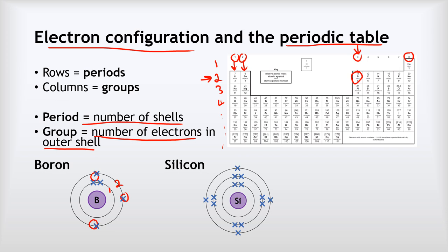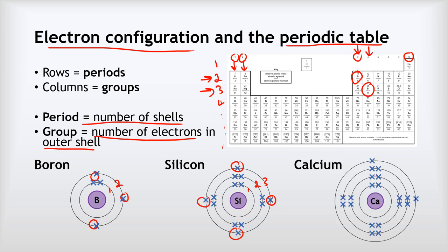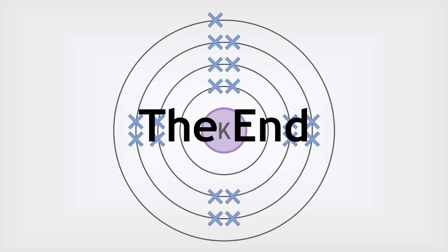Silicon is in period three and group four, so it has three electron shells and four electrons in its outer shell. Calcium is in period four and group two, giving four electron shells and two electrons in the outer shell. That is the relationship between electronic configuration and the periodic table — and that's this video done. Well done if you got to the end!